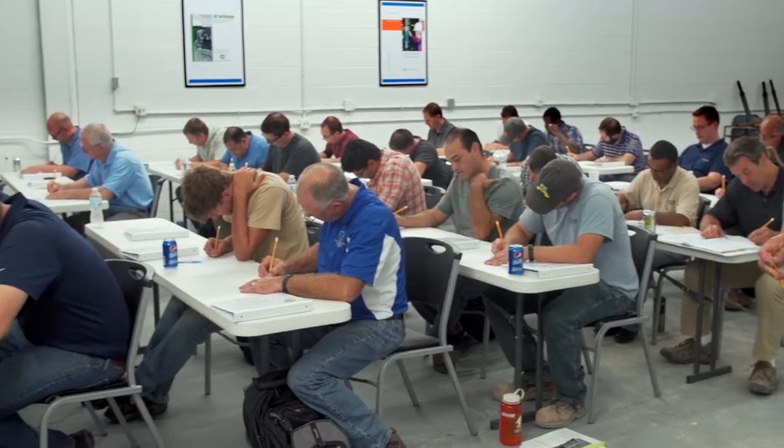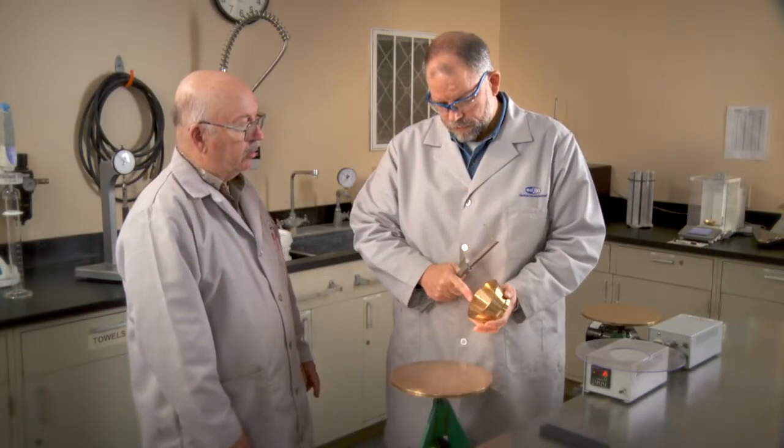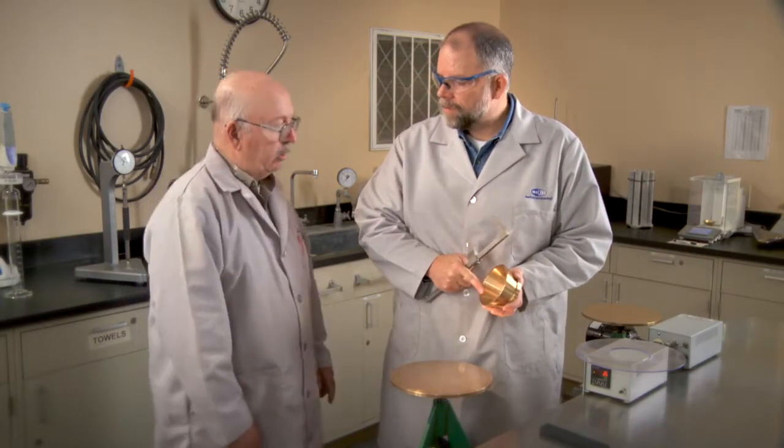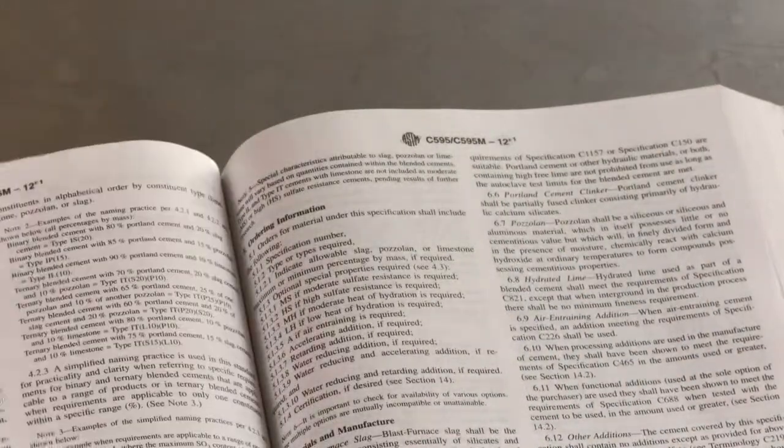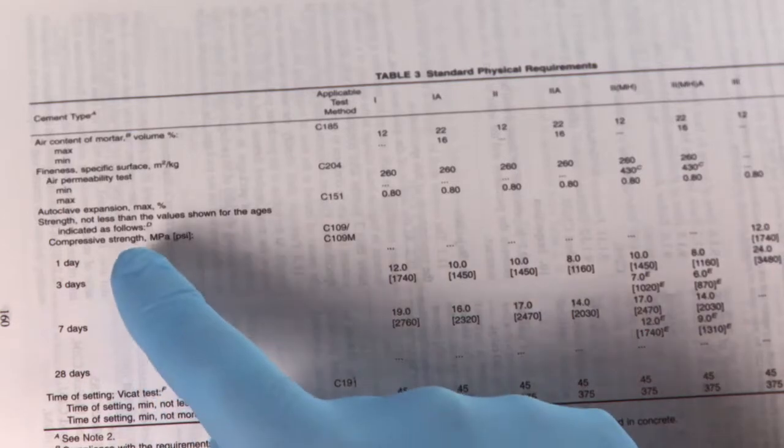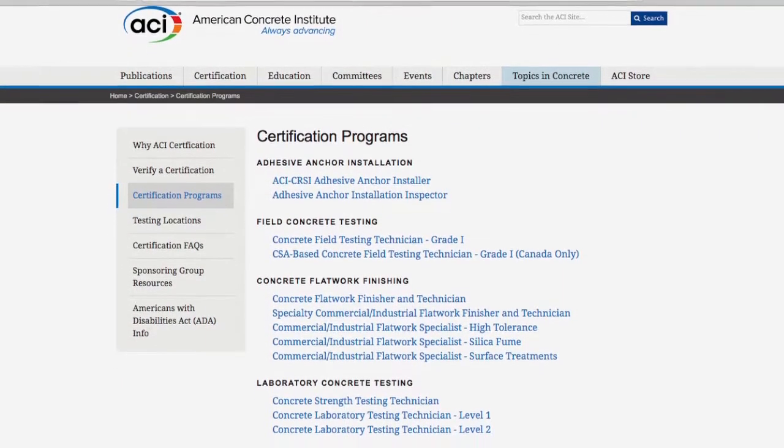This program includes a 100 question open book written exam as well as a practical exam covering all those methods previously mentioned. It also includes reference to ASTM standards covering equipment and laboratory conditions. For a complete list see the program outline on ACI's website.